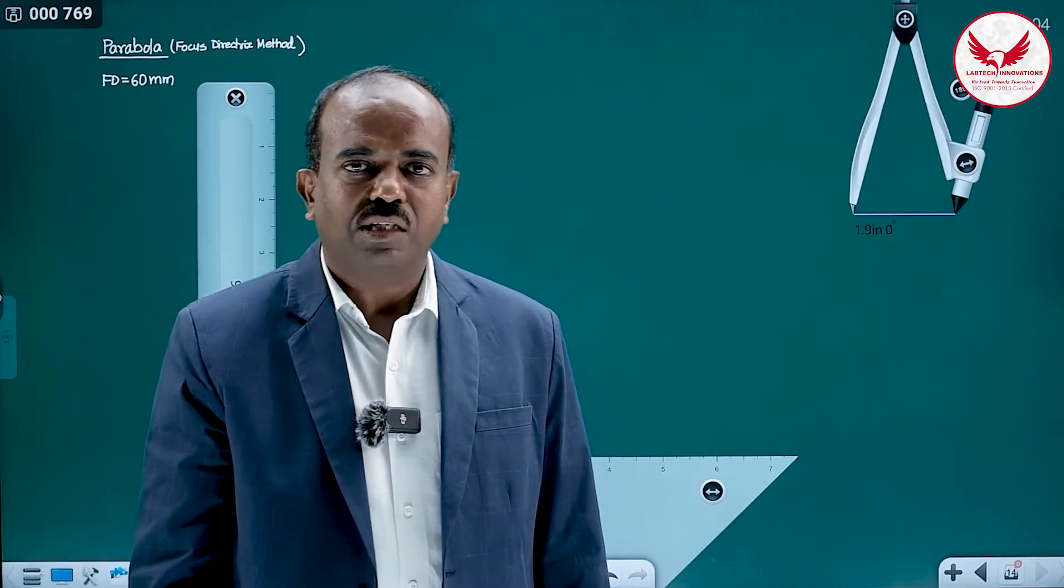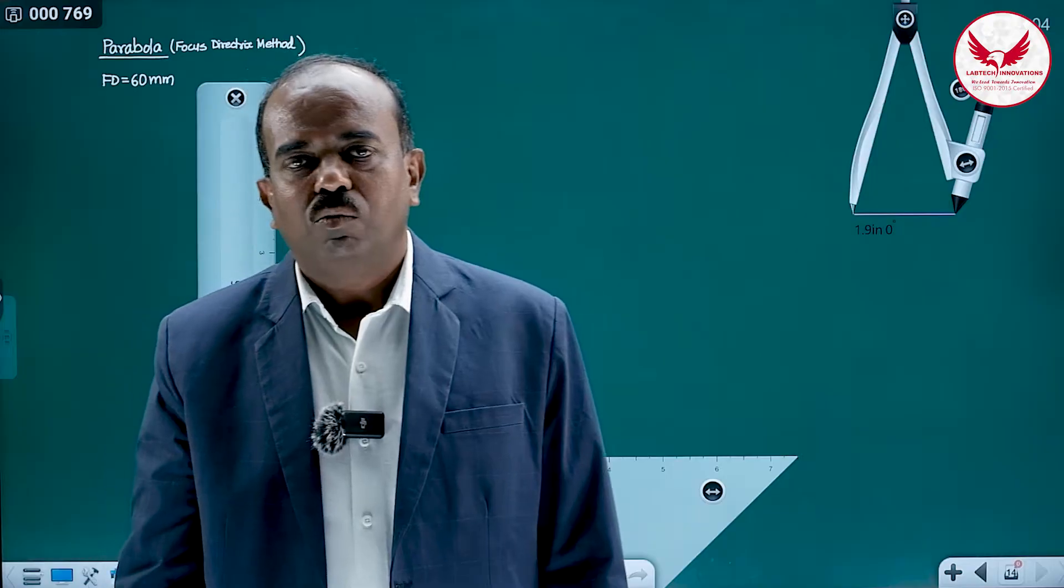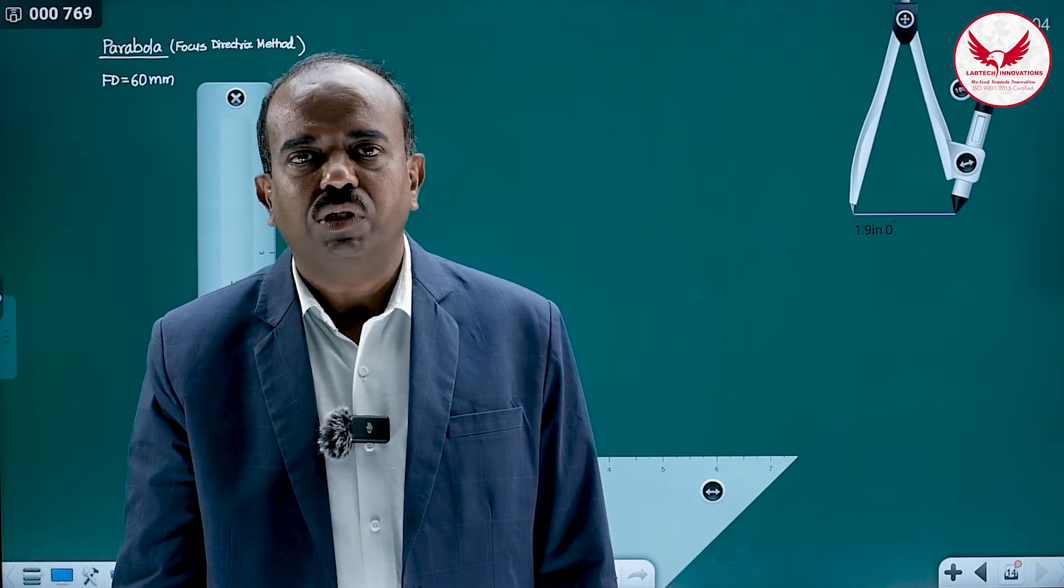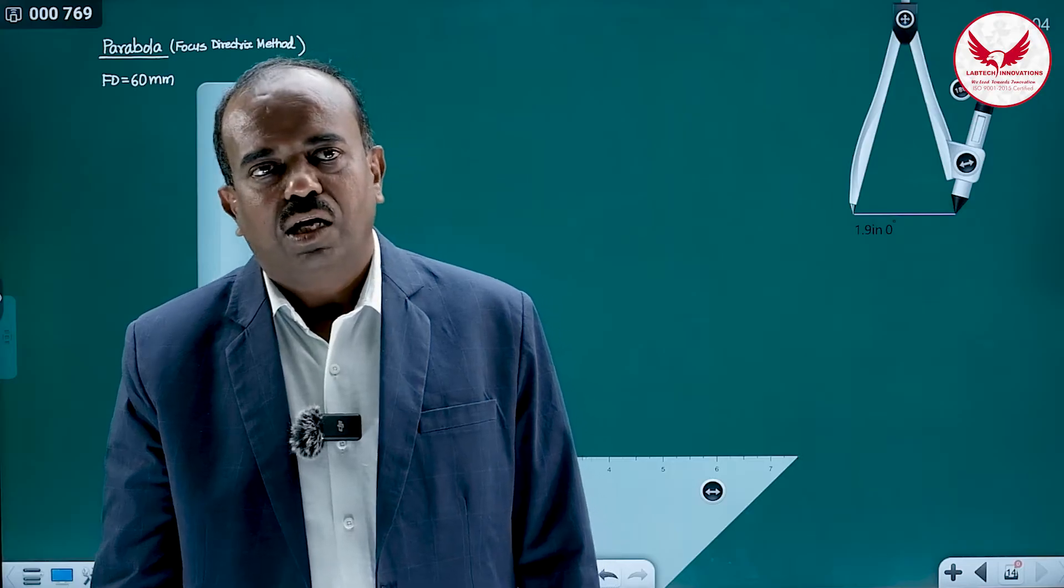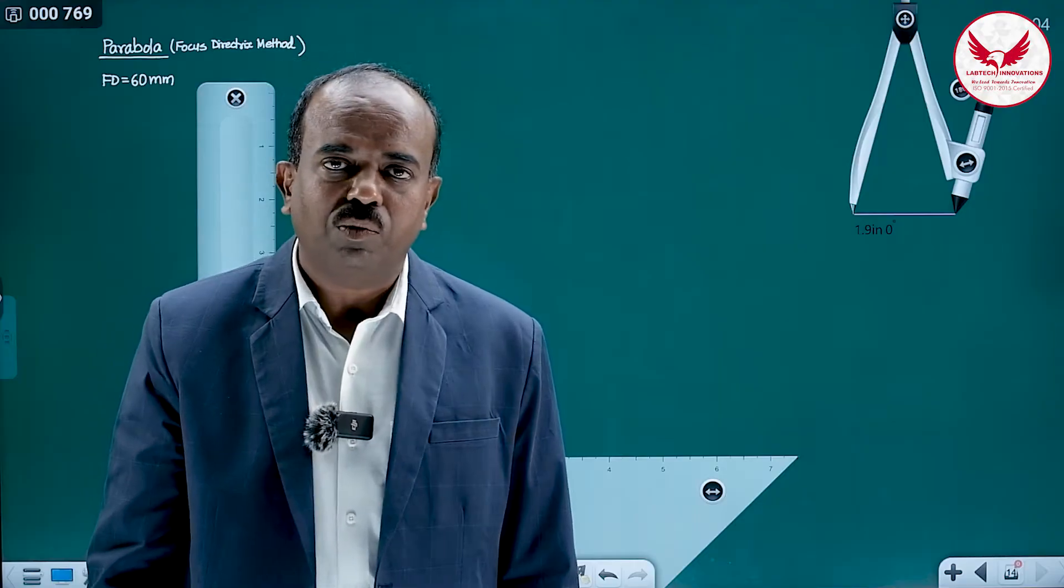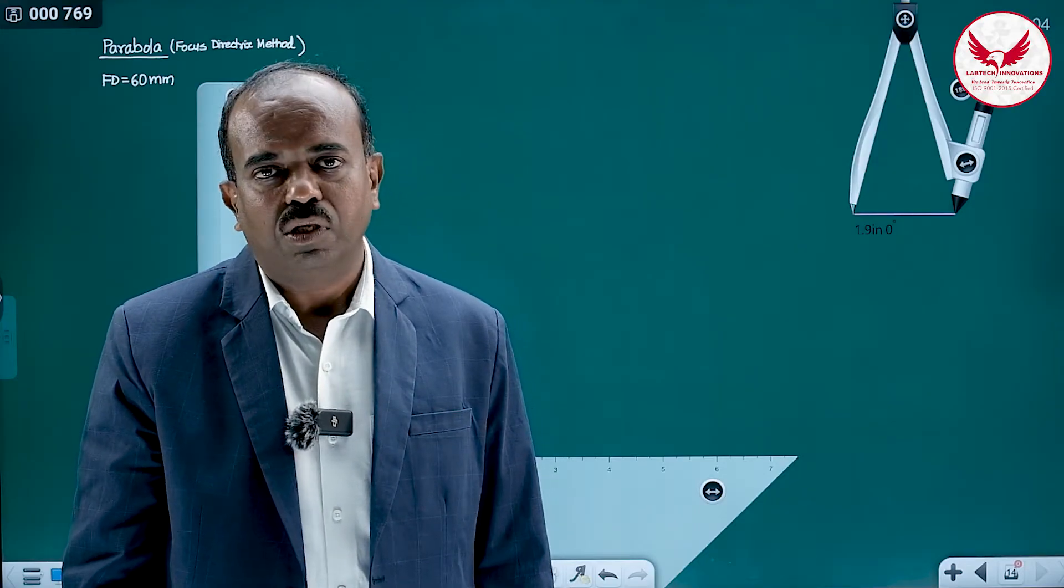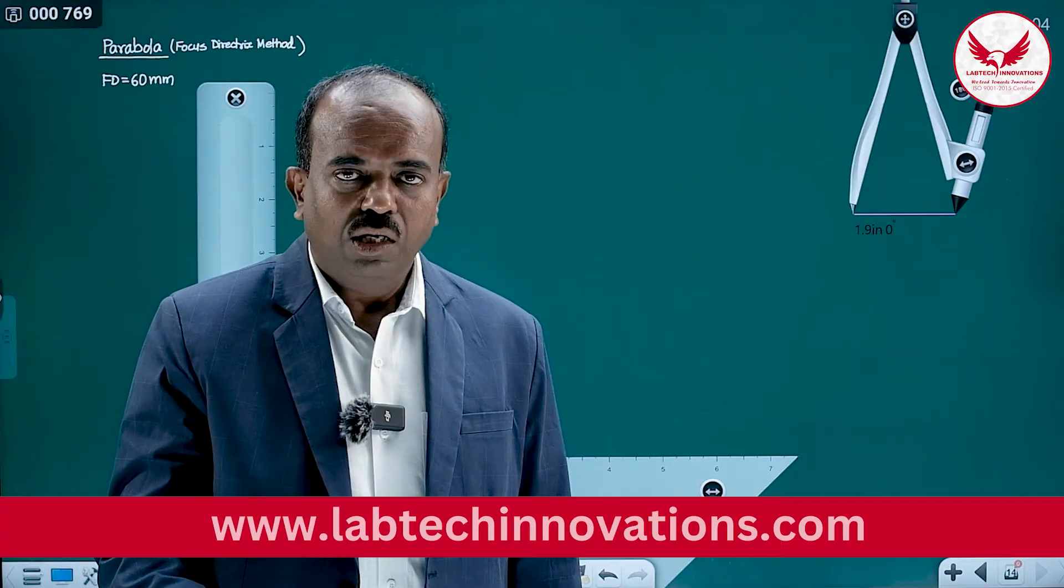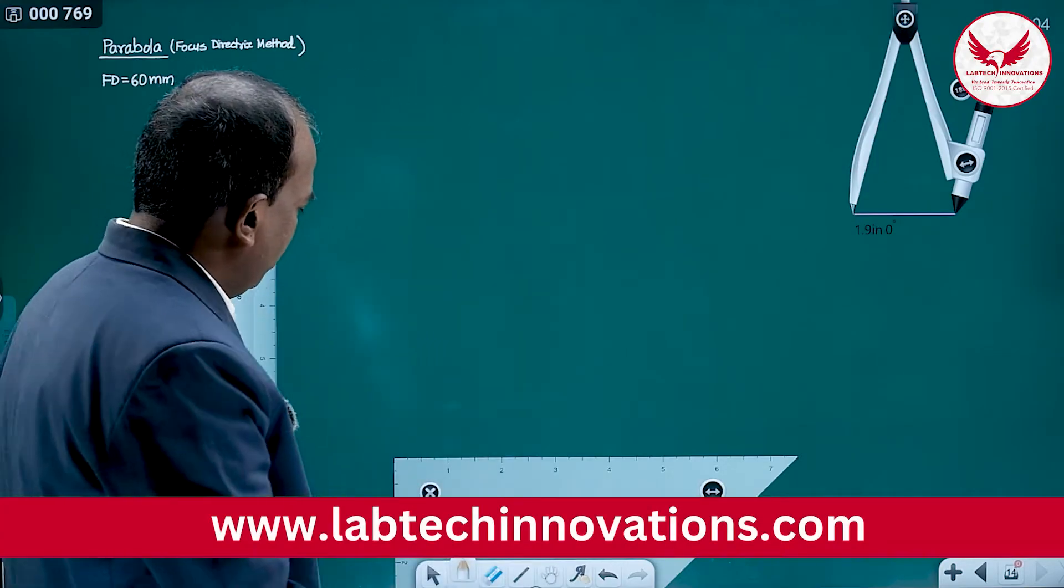The requirement of focus directrix method of parabola is: we must know the distance of a focus from the directrix and that distance is given, let's say 60 mm. Distance of a focus from the directrix is 60 mm and with this data only we are supposed to draw the parabola.